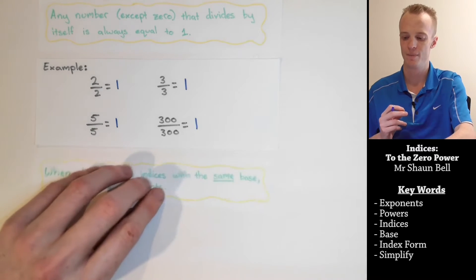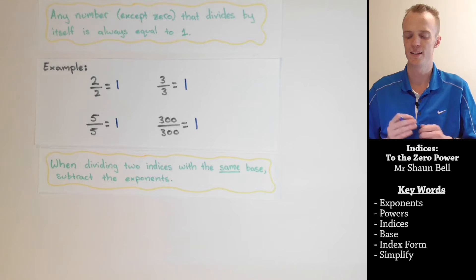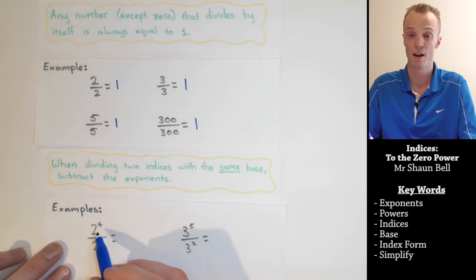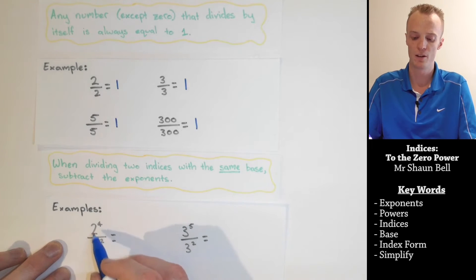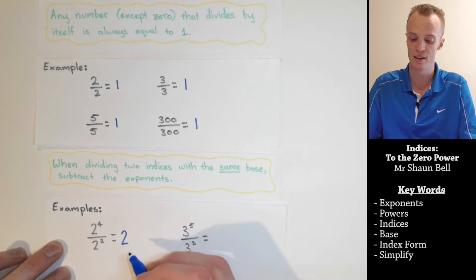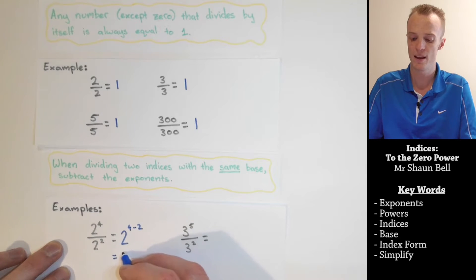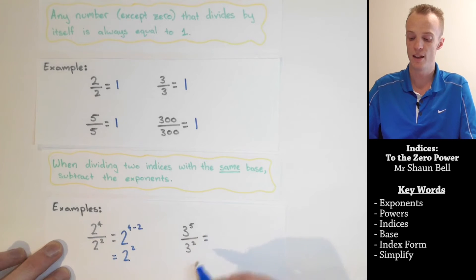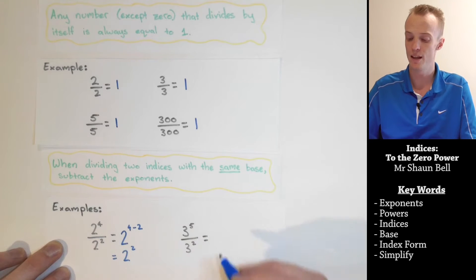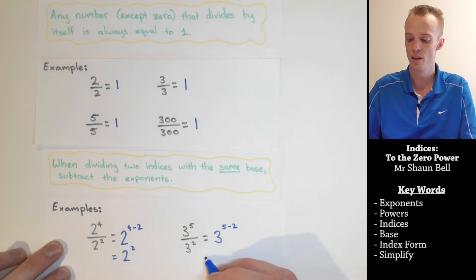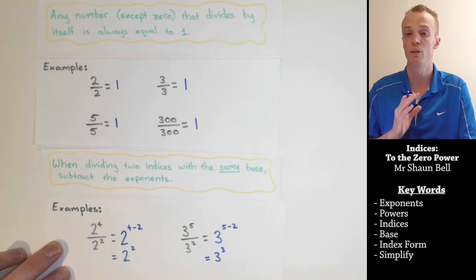The second rule we need to revisit is when we're dividing two indices with the same base, we subtract the exponents. So if we have two to the fourth power divided by two to the second power, we keep the base and subtract the exponents — four subtract two — which equals two to the second power. Similarly, three to the fifth power divided by three squared gives us three to the third power, or three cubed.